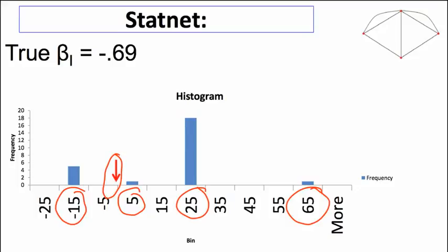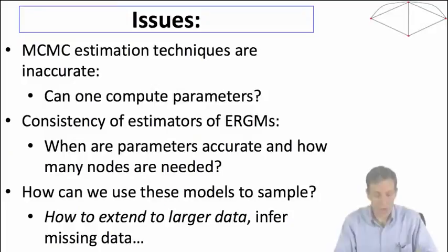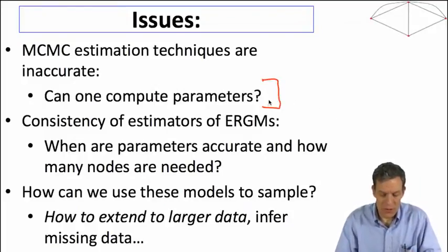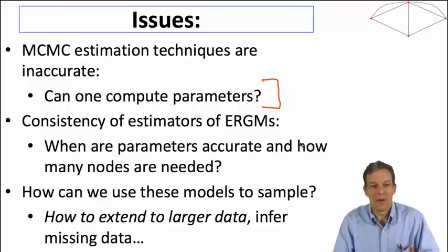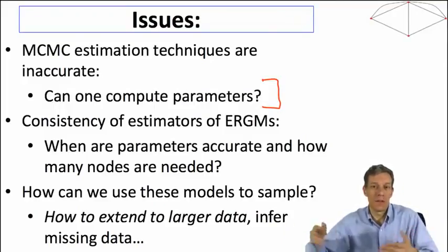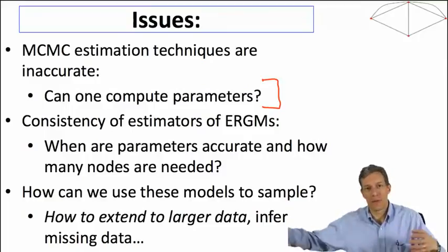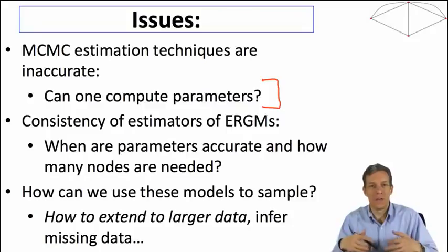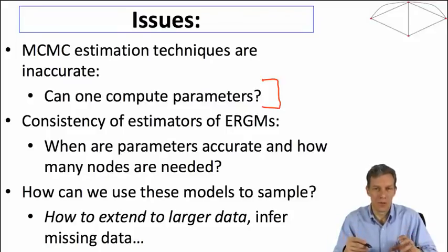And there are ways around this. How do we compute these parameters? Are we sure that the estimates should be accurate? So can we say something about how many observations you need to get accurate estimates? How many nodes are needed? What kinds of models will this work for? What kinds of models won't it work for? So there's a lot missing from the literature in terms of this.